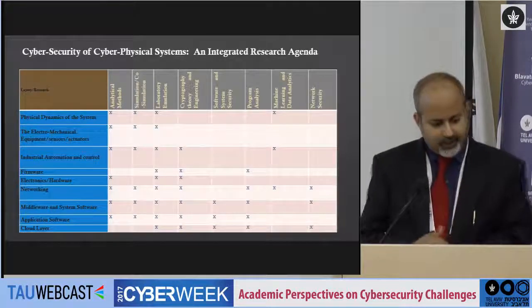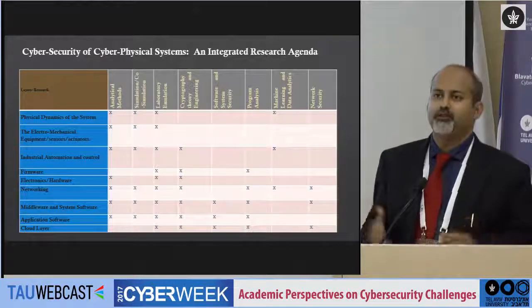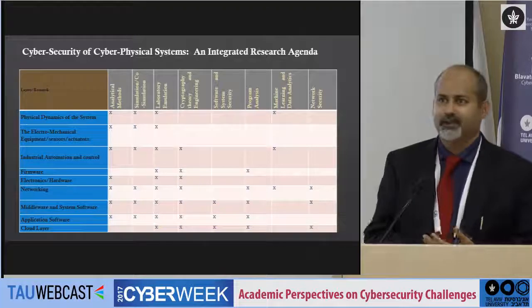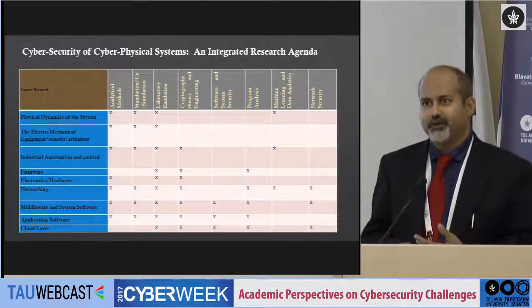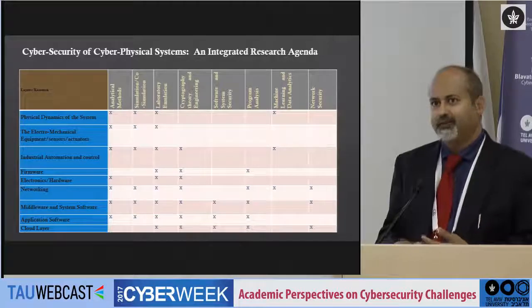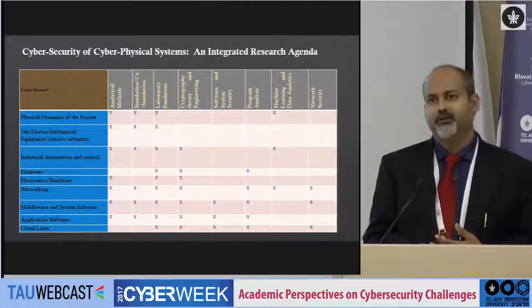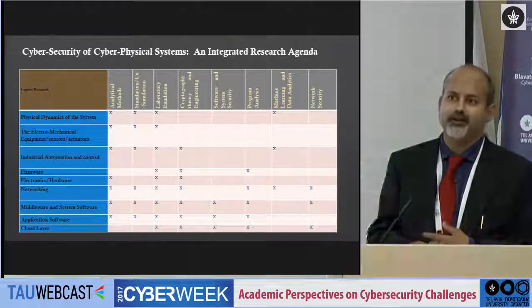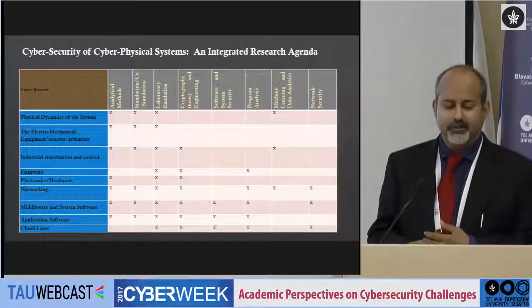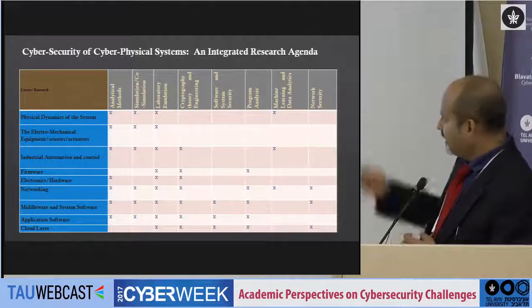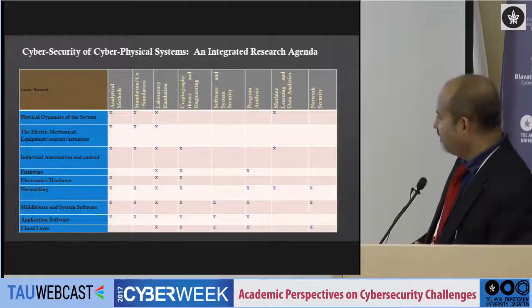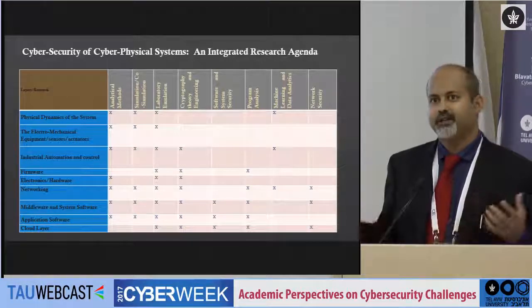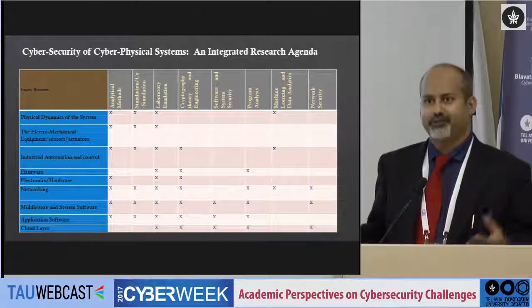Our approach has been to bring together people working in machine learning, program analysis, computer architecture, memory systems, formal methods, robotics, and cryptography — all under the umbrella of a center. We proposed this center and the way we look at it, we basically layered these systems. These are critical infrastructures — what we call an extra-large cyber-physical system. In this, you have the physical dynamics of the system that must be monitored for anomaly, because many times an attack may reflect itself in physical dynamics without any sign elsewhere, since it could be an insider attack.